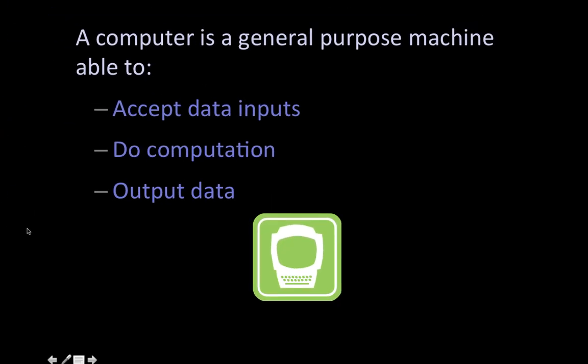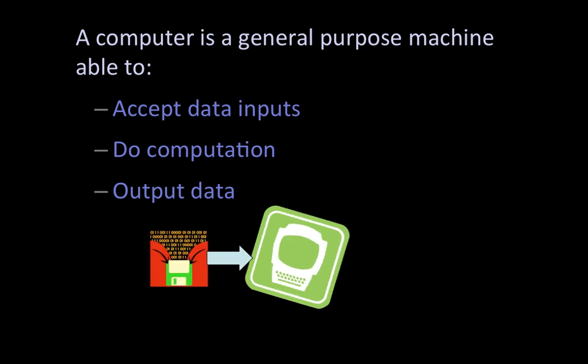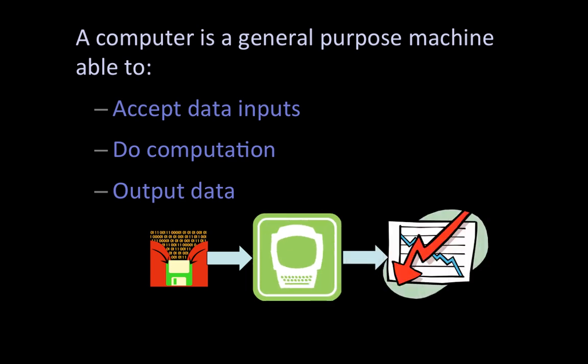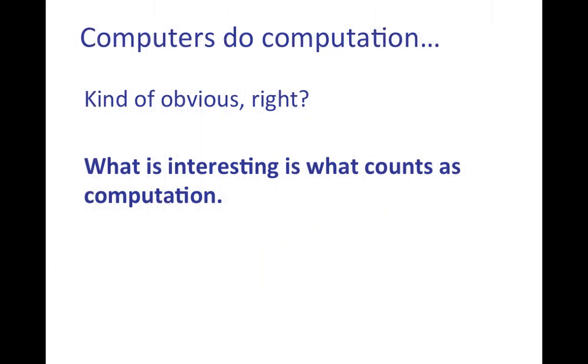This is a simple definition. A computer is a general-purpose machine able to accept some data as input, perform some computation, and output new data or information. It's kind of obvious, right? Computers do computation.